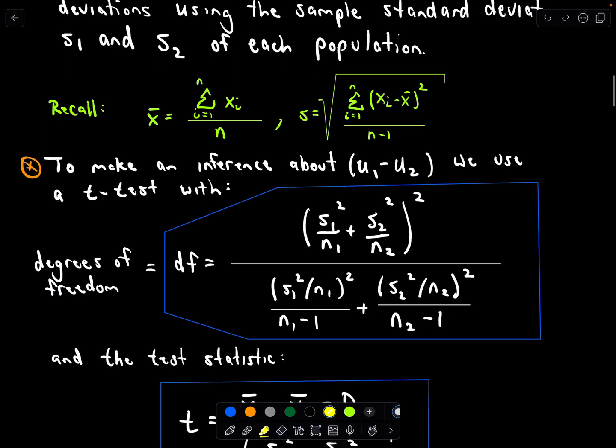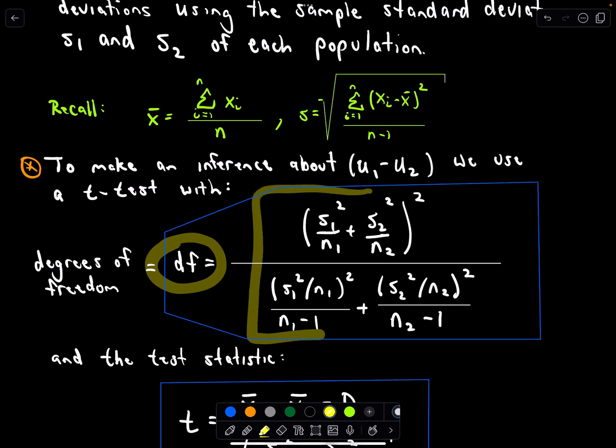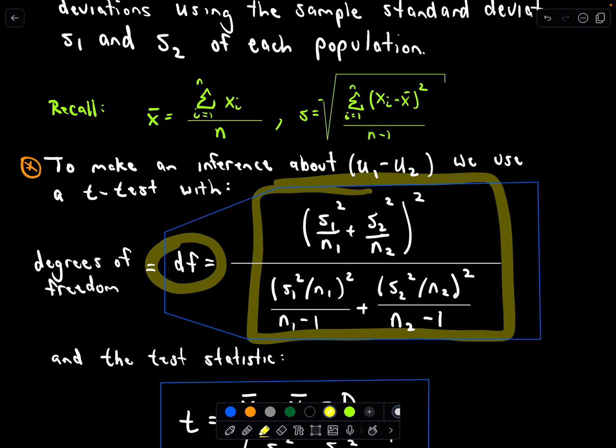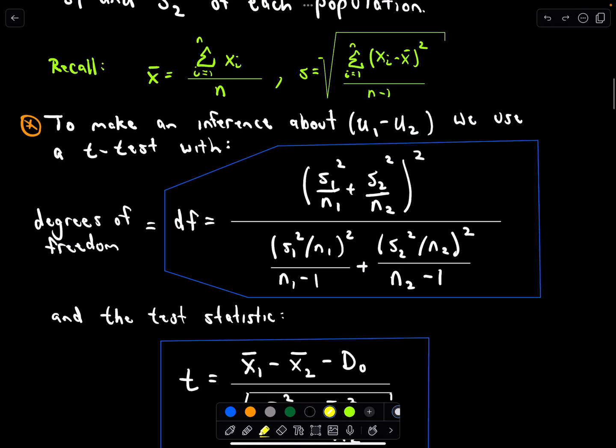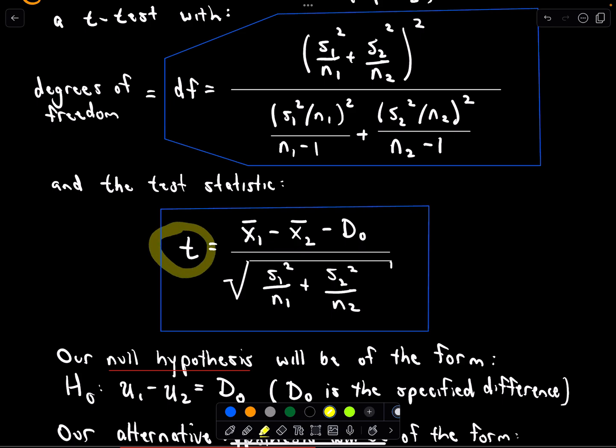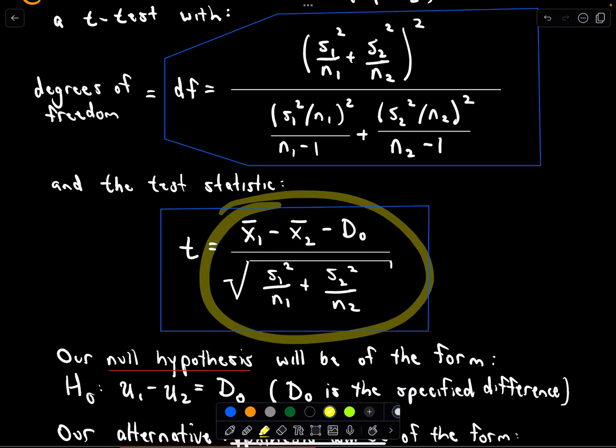What we're going to do to make an inference about that difference in the two means is we're going to use a t-test. And to do a t-test we have to compute the degrees of freedom. This big formula that we'll use over here is going to be the degrees of freedom. Again we're just using the sample standard deviations and the sample sizes from each of our populations. All you're really going to do is just compute the degrees of freedom. That's one bit of work you'll have to do in these examples. You'll compute this test statistic using this formula.